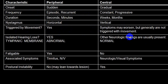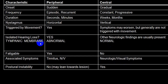The tympanic membrane may be affected or abnormal in peripheral vertigo — hole, ear discharge — while tympanic membrane is usually absolutely normal in central vertigo. The person complains of easy fatigue in peripheral; in central there are usually no such associated symptoms. Tinnitus and nausea/vomiting are present in peripheral; neurological symptoms and signs are very common in central. Postural instability in peripheral leads toward the side of damage, while in central variety postural instability is present with positive Romberg sign and other signs indicating central damage.